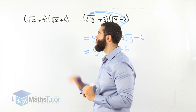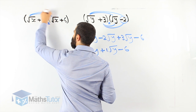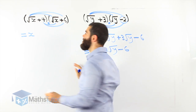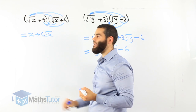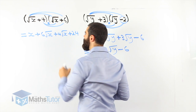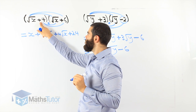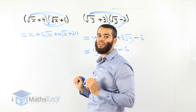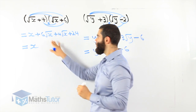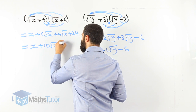Next: root x plus 4, all in brackets, multiplied by root x plus 6, all in brackets. Same process. Root x times root x is x. Root x times 6 is 6 root x. 4 times root x is 4 root x. And 4 times 6 is 24. Now we see if we can simplify — the x can't simplify further. We do have like surds though: 6 root x plus 4 root x is 10 root x. And then lastly plus 24.